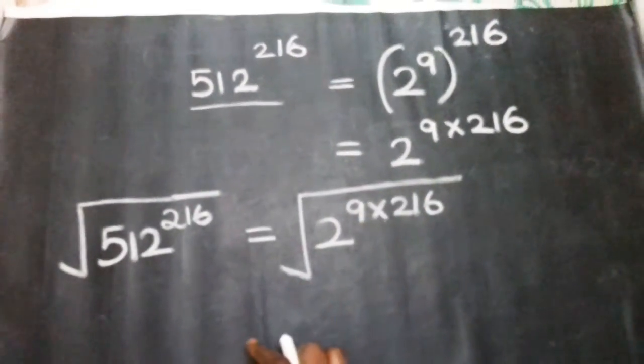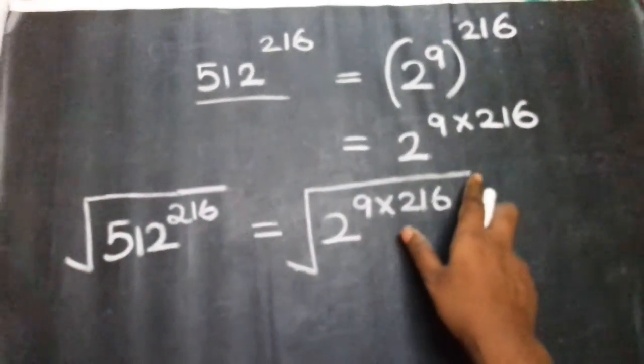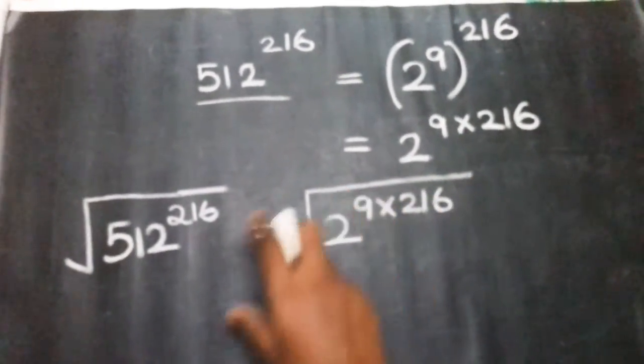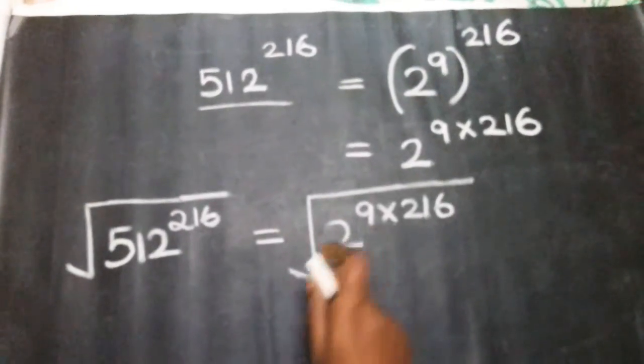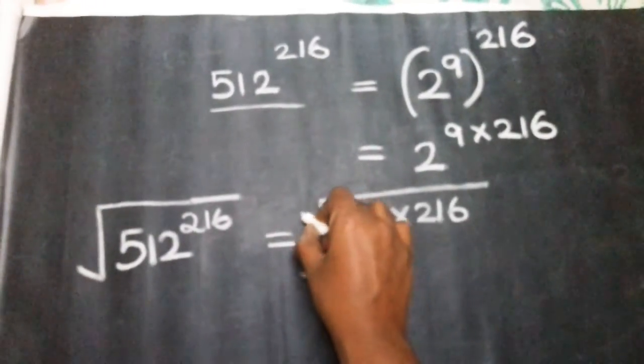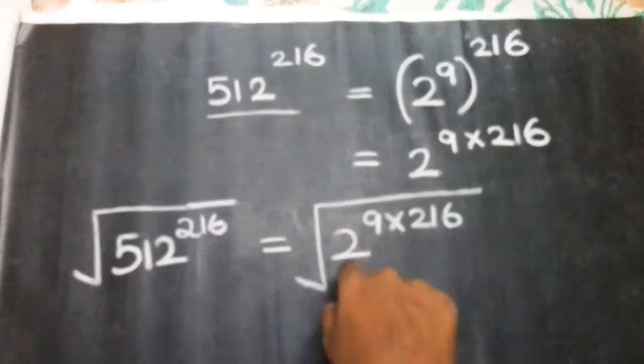Apply the square root. By default, this symbol means square root. Now, the cube root requires us to mention 3, and the fourth root requires us to mention 4. We have to mention the index for each root.